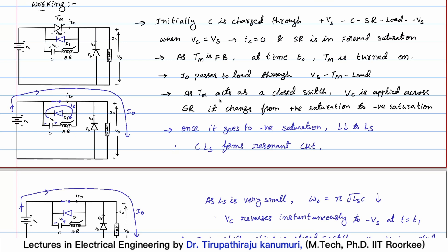With these basics, let us proceed to the working of this chopper. Initially, from the supply, current will pass through the capacitor to the saturable reactor and then to the load. As this current passes, the capacitor will gradually start charging until it reaches the supply voltage Vs. As current passes through the reactor, after some time it will go to saturation and act like a closed switch. We assume that Vc is charged to supply voltage and the reactor is initially saturated in the positive saturation region.